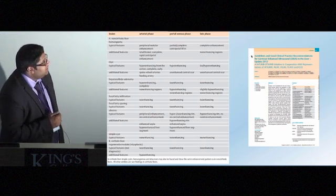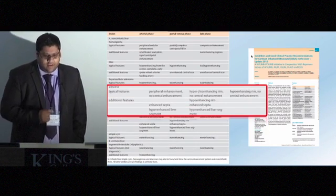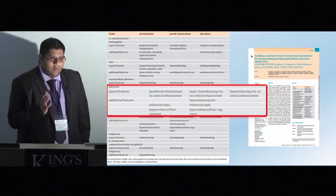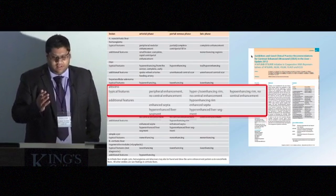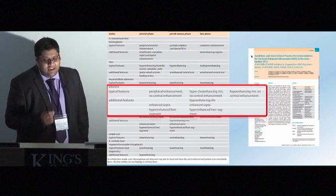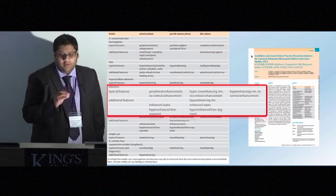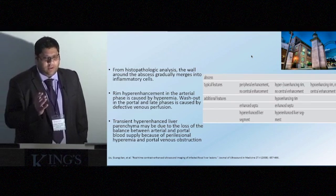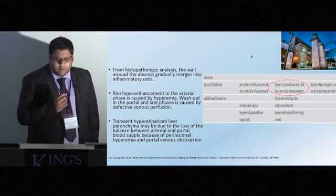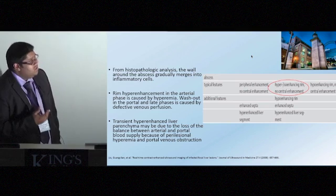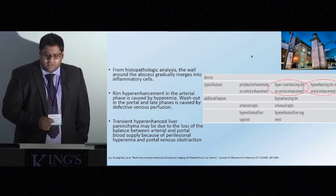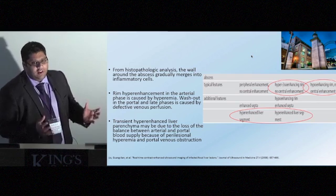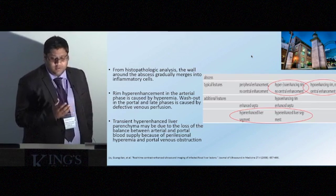This is our helpful cheat sheet which fits on any ultrasound table. Highlighting the abscess section, what's described is arterial peripheral enhancement that may remain hyper-enhancing in the portal phase and may be hypo-enhancing in the late phase. There may also be enhancing septi. Critically, there is no central enhancement to the fluid component. This is due to expansion and merging of chronic inflammatory cells around the edge, resulting in hyperaemia giving the hyper-enhancing rim. There may also be defective venous perfusion causing hypo-enhancement in the late phase, and surrounding mass effect causing hyper-enhancing sub-segments of liver.